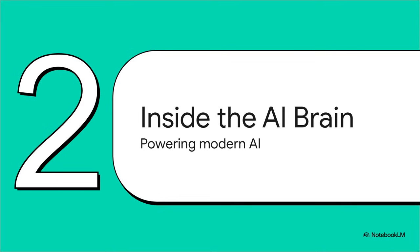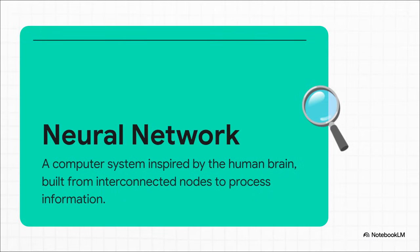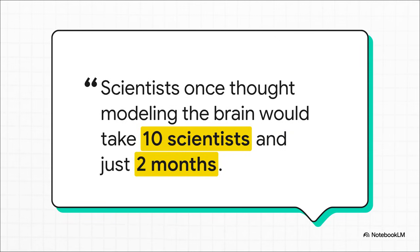Now let's pop the hood and take a look at the actual architecture, the components powering modern AI. What actually makes deep learning deep? It all starts with the neural network, and this is literally inspired by our own brains. Just like our brains have neurons that connect and fire to help us learn, an AI's network has digital neurons connected in layers. As data passes through, each layer gets a little bit smarter, recognizing more complex features. That's how it can learn the difference between, say, a picture of a cat and a picture of a dog.